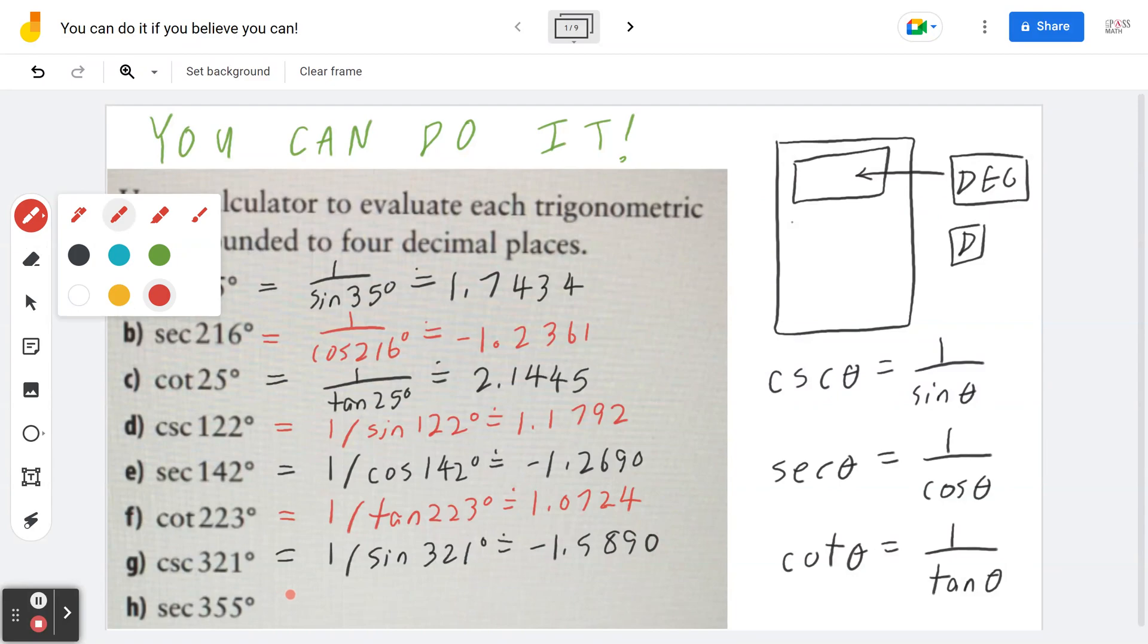Last but not least, great starter, great finisher. If you think about secant of 355 degrees, that's 1 divided by cosine of 355 degrees, which is approximately 1.0038.